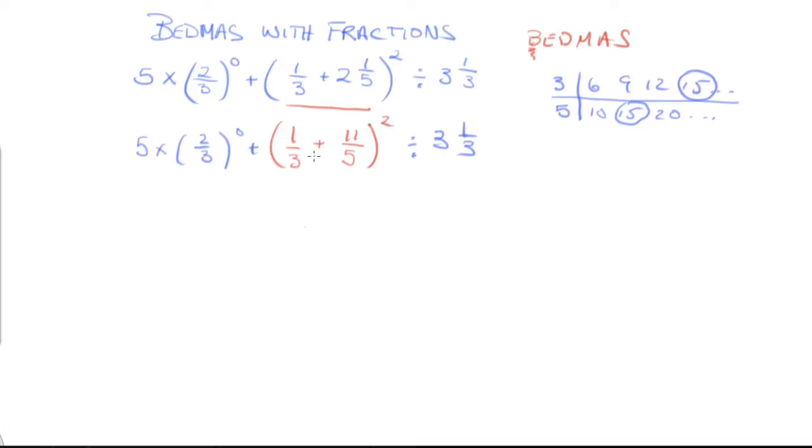So I'm going to recopy everything as it is. So I've got 5 times 2/3 to the power of 0 plus, and now inside my bracket I have something out of 15 plus something out of 15, close the brackets, squared, divided by 3 and 1/3. Now, in the top of the numerators over here inside my bracket, over the 15s, I need to find the numerators that go with these numbers.